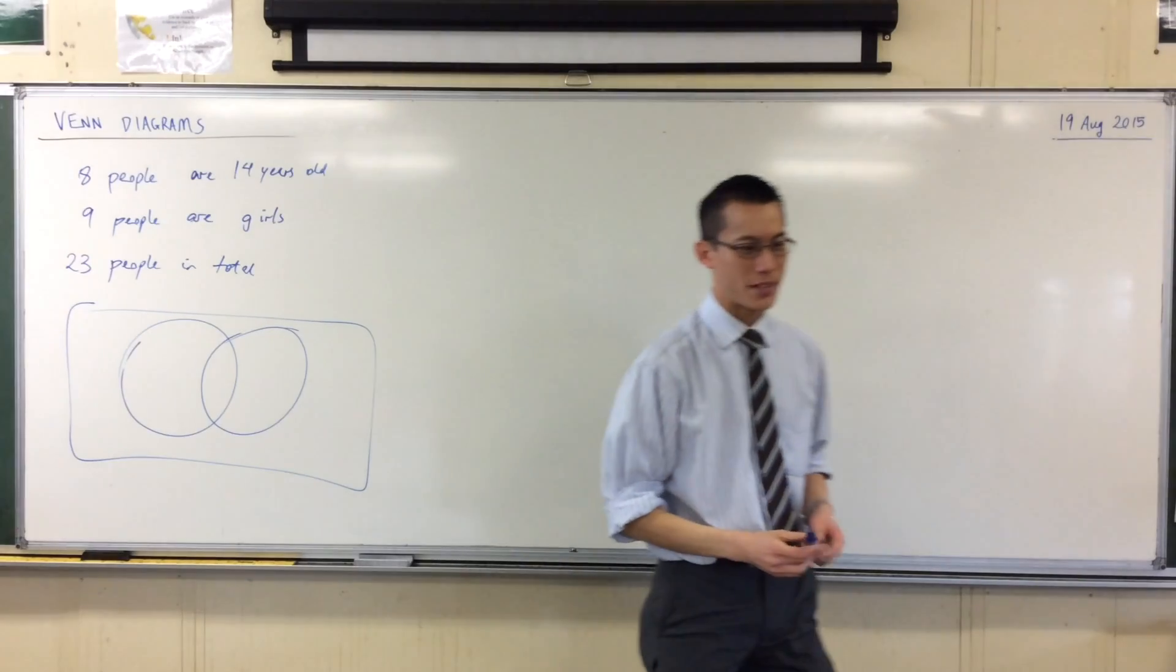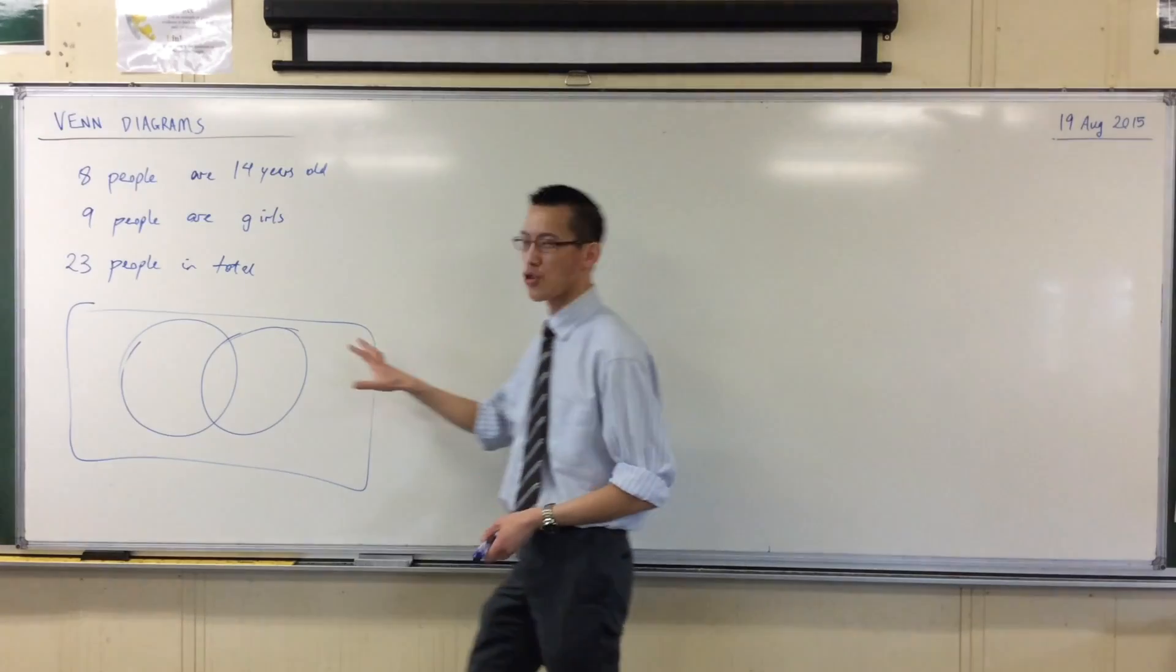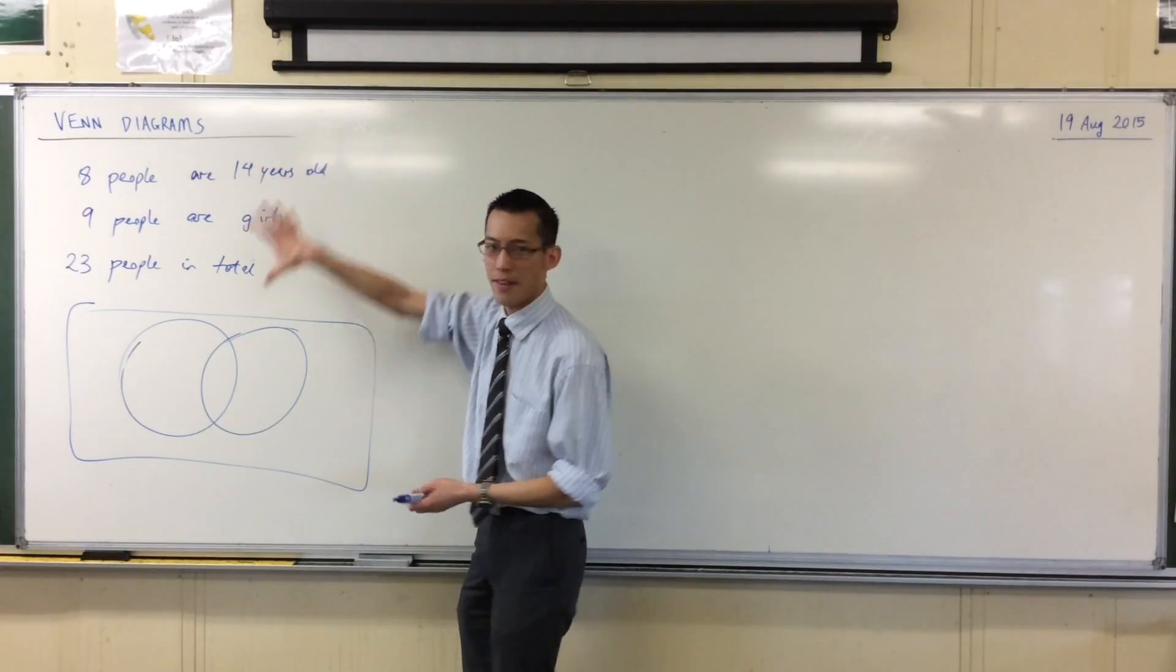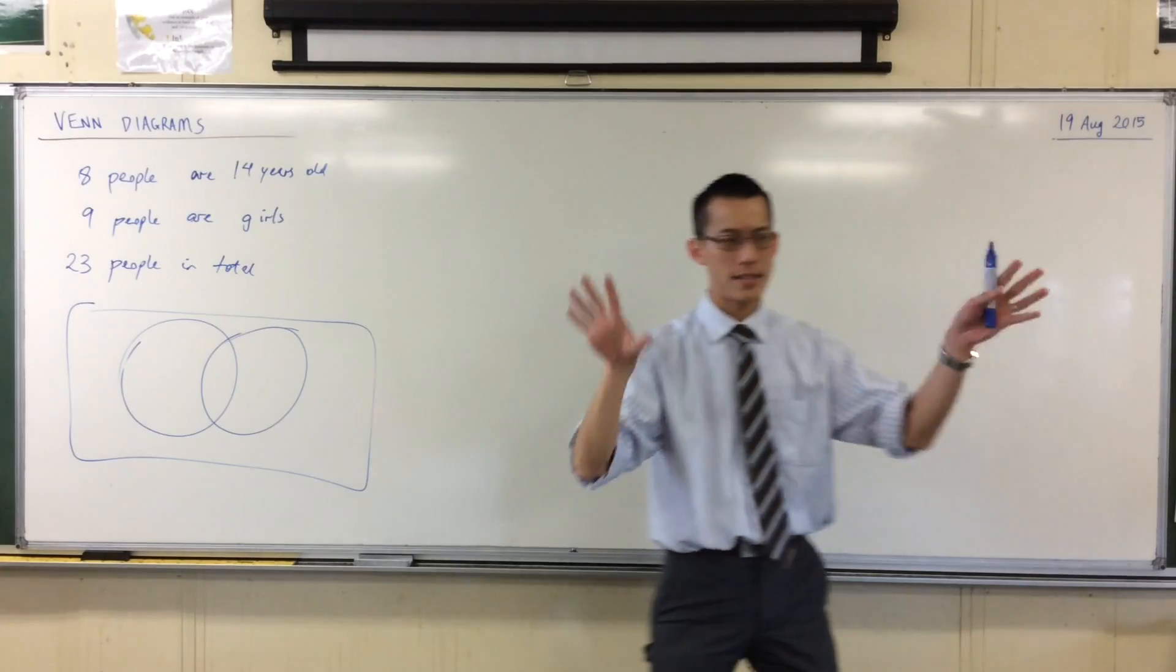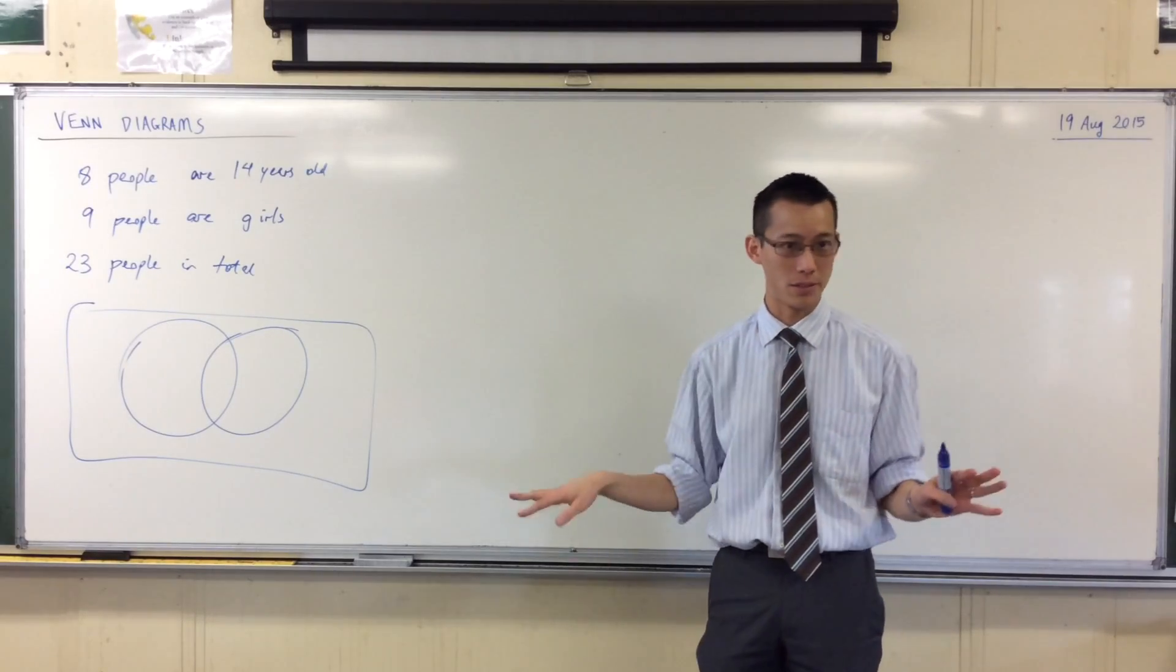John Venn was a British mathematician who was trying to illustrate relationships between different things when there are different qualities that they can have at the same time, or they can have neither of those qualities.